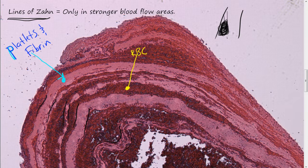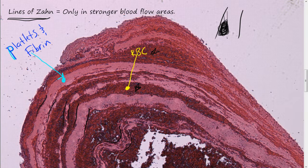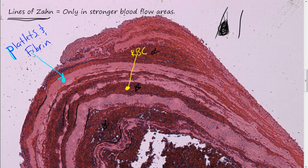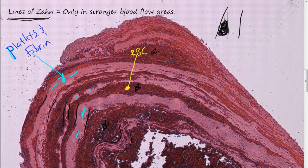The darker parts are the red blood cells. So you have red blood cells here, red blood cells here, red blood cells here. And then these wider parts are platelets. These are platelets and fibrin. Platelets and fibrin, platelets and fibrin, platelets and fibrin.